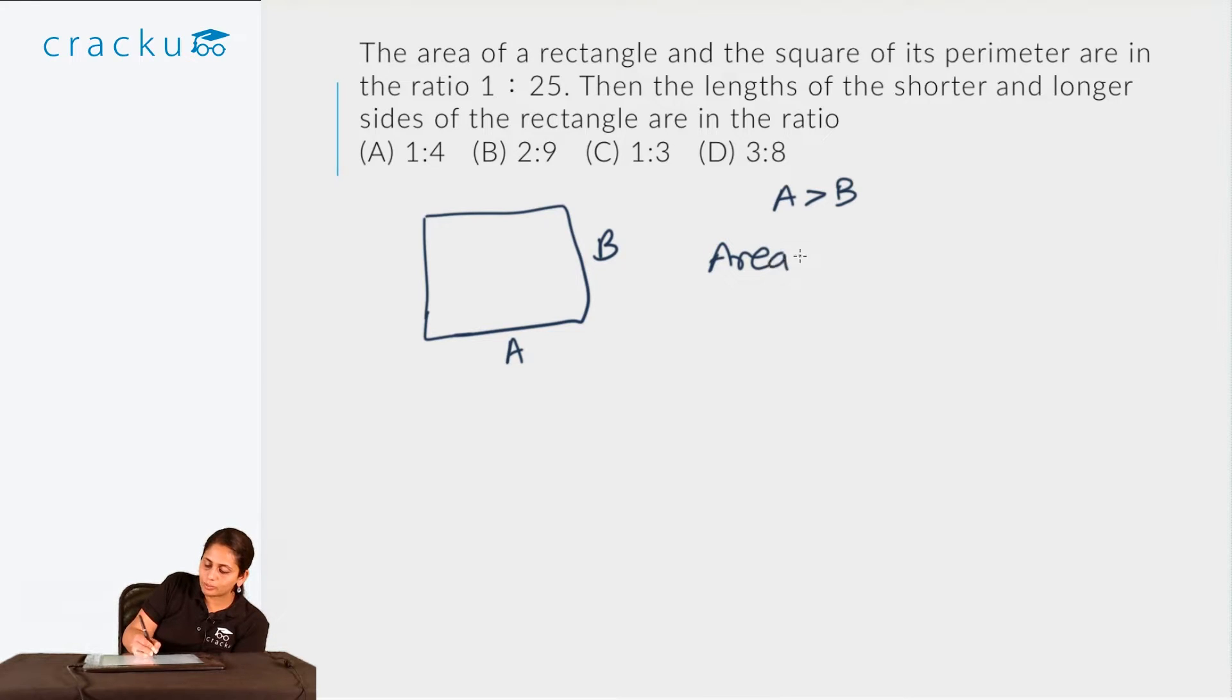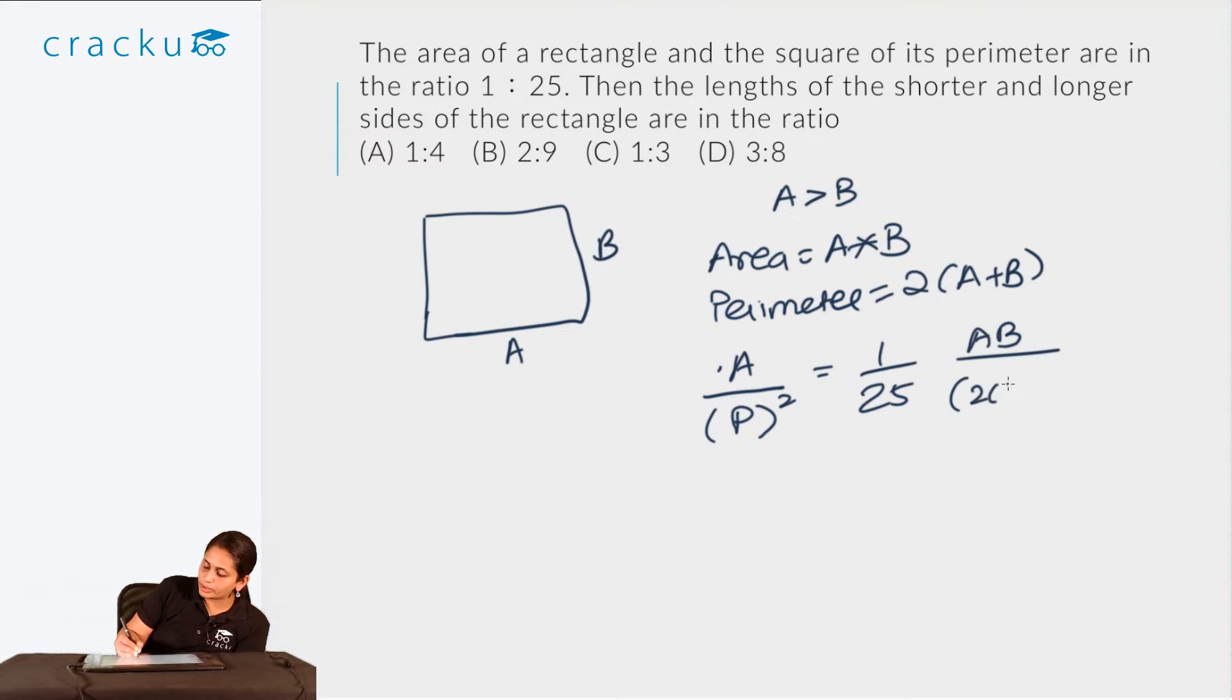The area of the rectangle, what would be the area? Area would be A into B. And what would be the perimeter? Perimeter would be 2 times A plus B. So I am told that area of rectangle by square of perimeter is in the ratio 1 by 25. So AB divided by 2 into A plus B, the whole square, is equal to 1 by 25.